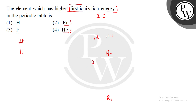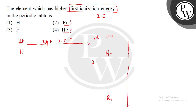We know that in the periodic table, going left to right, the atomic number and nuclear charge increase. The electrons are in the same shell, but the nuclear charge increases. Due to that, the Z effective increases, and you need to give more energy to remove the electron — meaning ionization energy increases left to right.